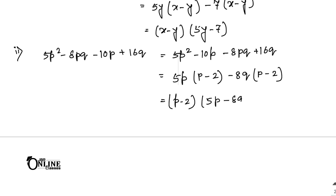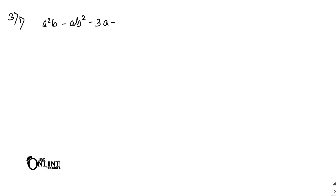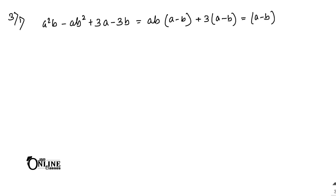Sum number 3.1: a²b - ab - ab² + 3a - b. From the first two terms, common ab gives ab(a - b). From the next, common 3 gives 3(a - b). So the answer is (a - b)(ab + 3).